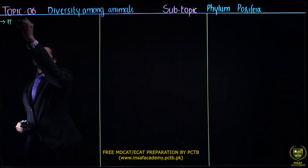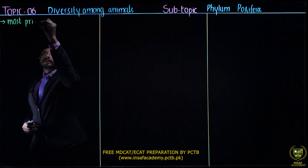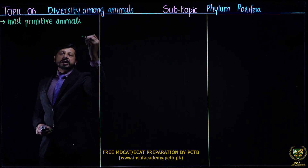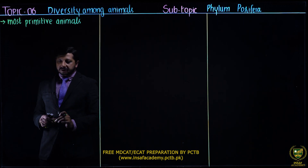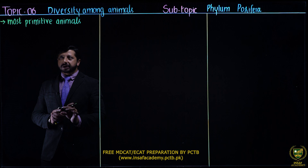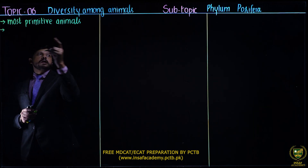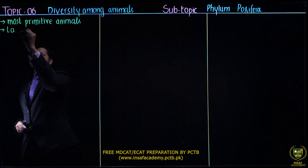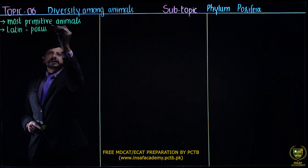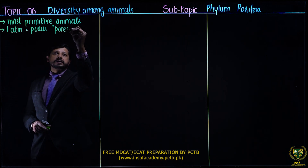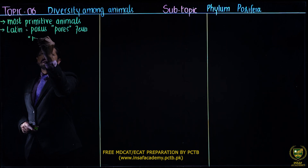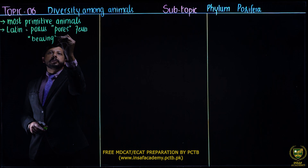These are the most primitive animals — the most earliest forms of animals as per the concept of evolution. The word Porifera is derived from the Latin words 'porus,' which means pores, and 'ferra,' which means bearing. So these are pore-bearing animals.